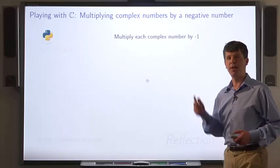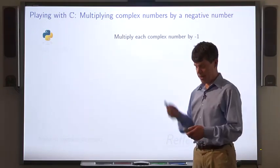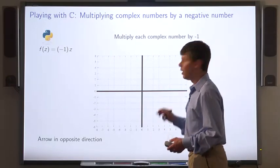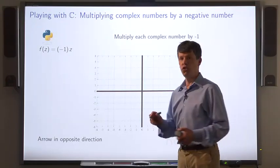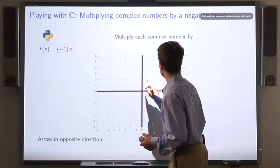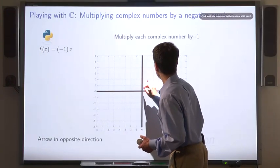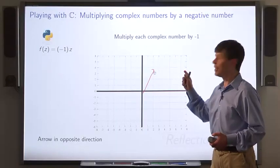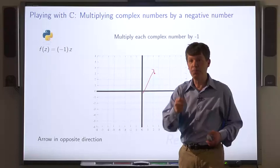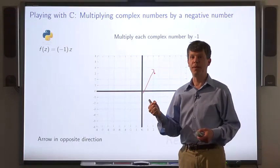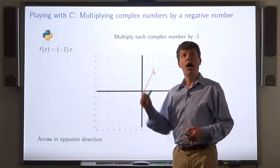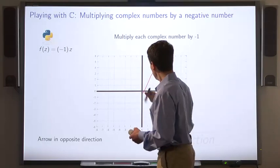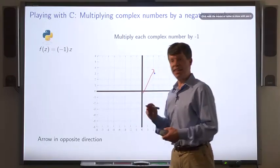What about if we multiply a complex number by minus 1? Let's try that. Let's start with the same complex number 2 plus 4i. Multiplying this by minus 1 means multiplying the real part by minus 1 and the imaginary part by minus 1. So we end up with minus 2 plus minus 4i, which is an arrow that goes in exactly the opposite direction.